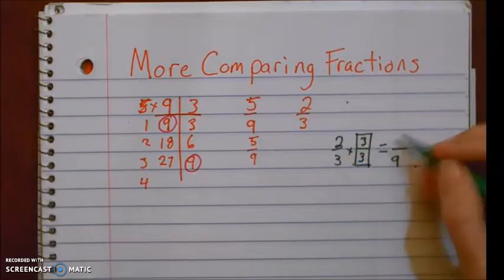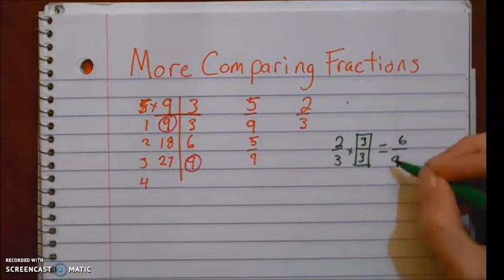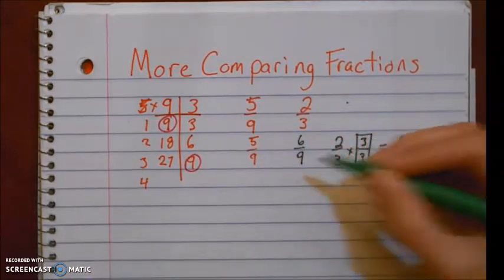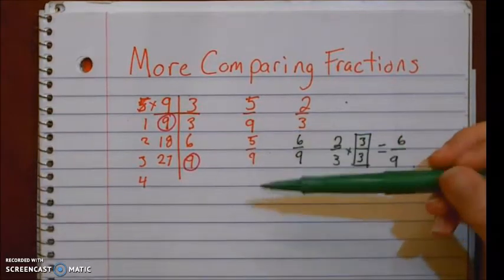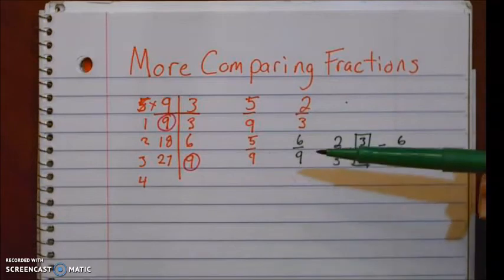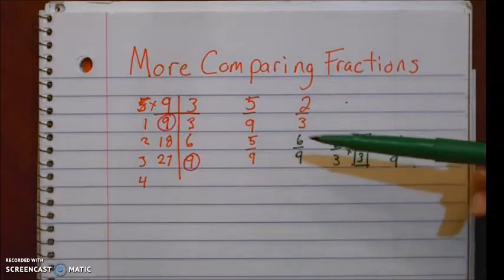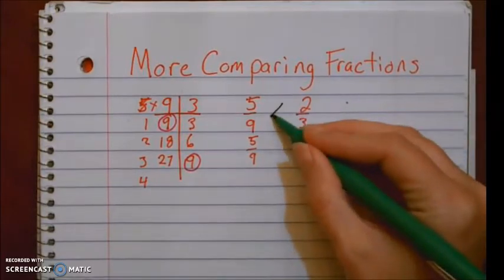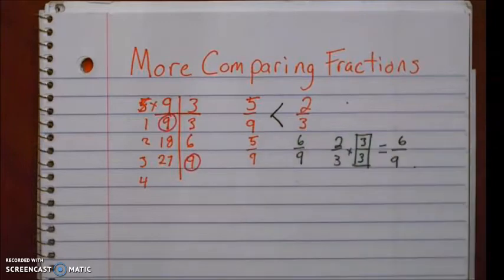Two times three is six. So two thirds is the same as six ninths. If I have two things that are the same size, they have the same amount of equal pieces, the one with more pieces is going to be bigger. So in this case, five ninths is less than two thirds. All right, let's do another one.